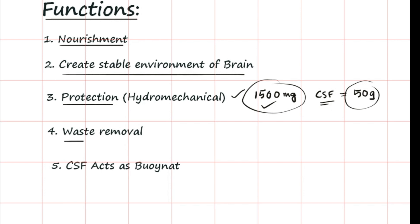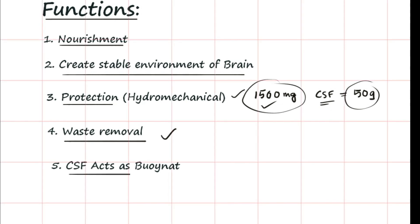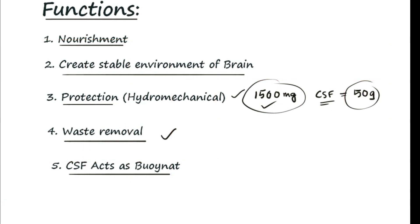CSF also facilitates the removal of waste metabolites from the brain. Waste metabolic end products drain into the CSF and finally into the venous system. Lastly, the CSF acts as a buffer to the brain, providing mechanical support and scaffolding to the central nervous system. These are the main basic functions of the CSF, and the clinical aspects will be covered in the next video.